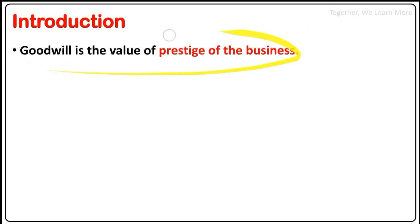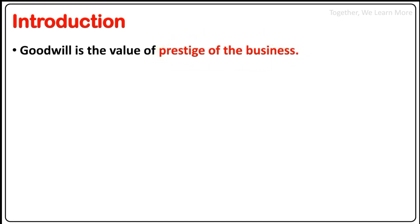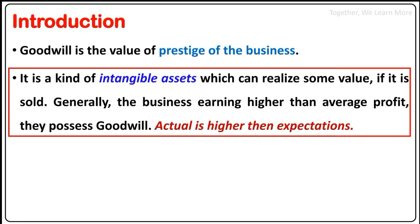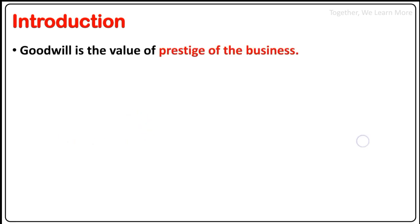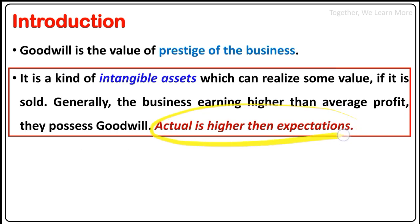Goodwill is the value or prestige of a business. It is a hidden positive value — a kind of intangible asset which can realize some value if it is sold. Generally, businesses earning higher than the average profit possess Goodwill. In other words, actual profit is higher than expectation.